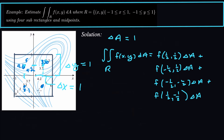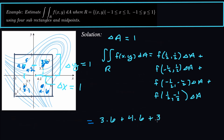The last midpoint is also between 4.2 and 5 but closer to 5, so we'll say about 4.6 again. So the four function values are 3.6, 4.6, 3.1, and 4.6. The double integral estimate equals 3.6 times 1 plus 4.6 times 1 plus 3.1 times 1 plus 4.6 times 1, which gives us 15.9.